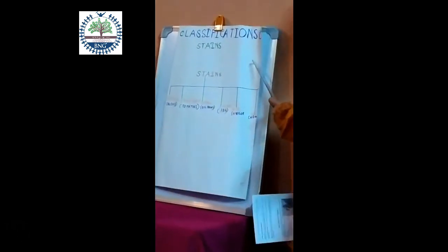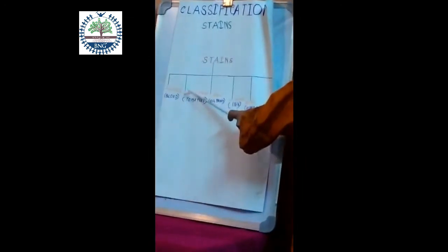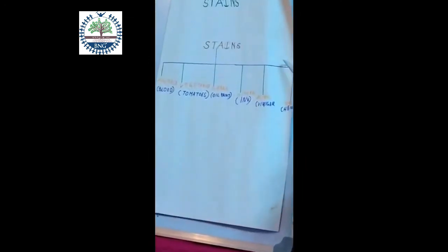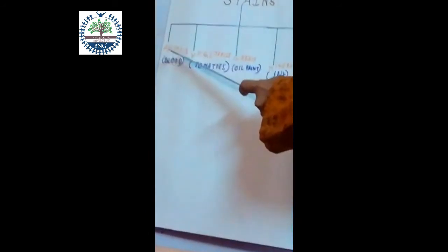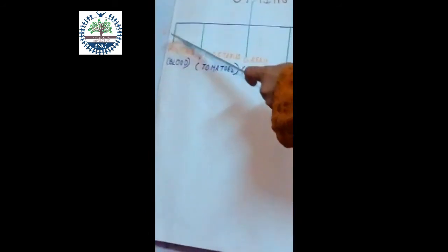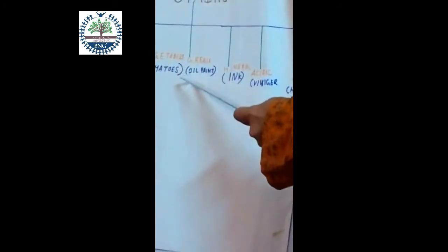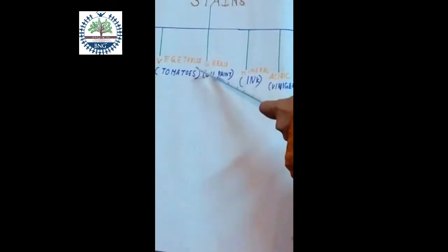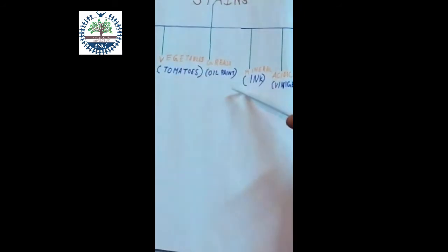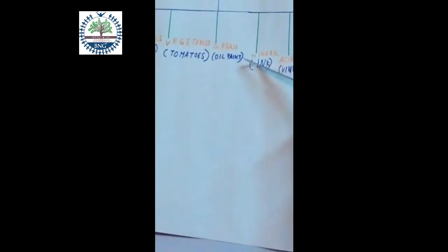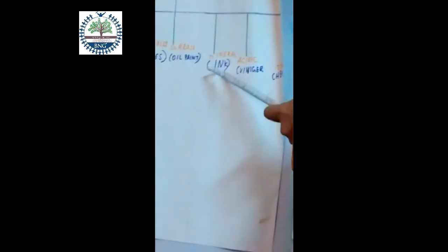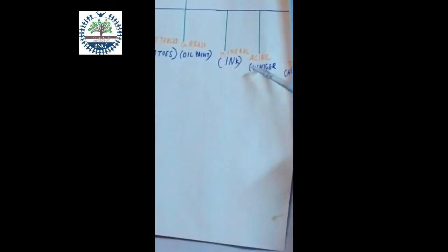Now I will show you the classification of stains. Stains can be divided into five classifications. One is animal stains - example: blood. Two, vegetable stains - example: tomatoes. Three, grease stains - that comes from oil or paint. Four, mineral stains - example: ink stain. Five, acidic stains - example: vinegar.